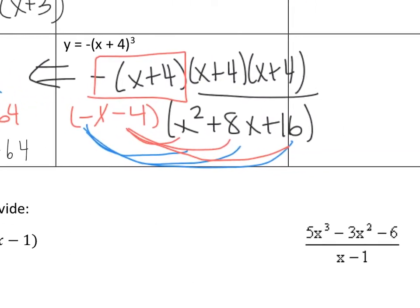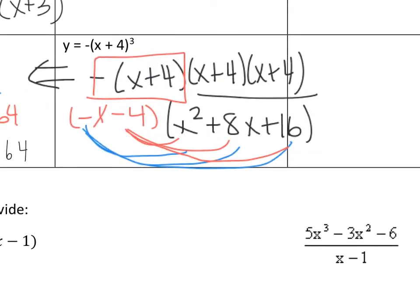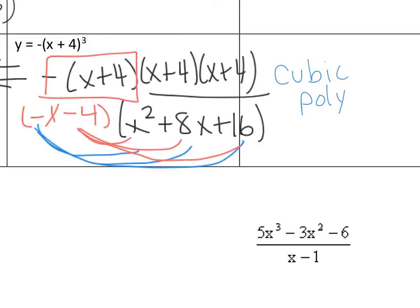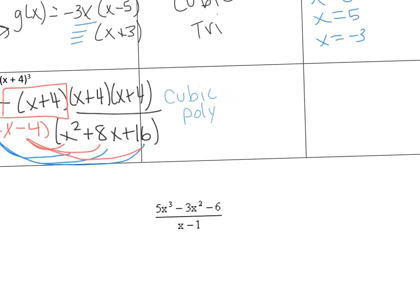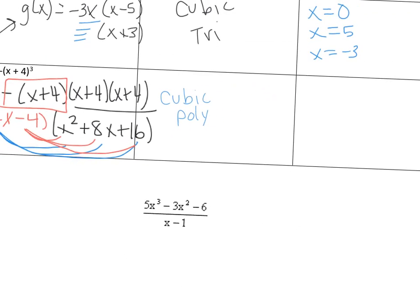The name of this is a cubic polynomial because it has four or more terms. And the zeros are going to be x equals negative 4 with a multiplicity of 3.